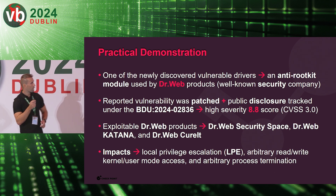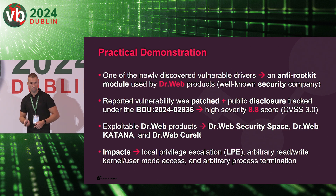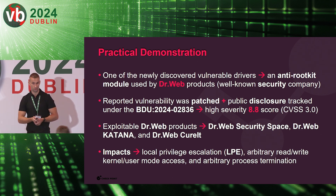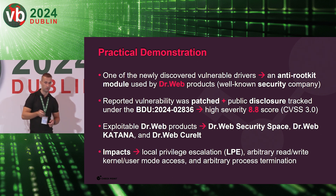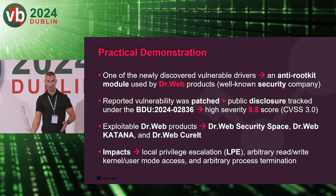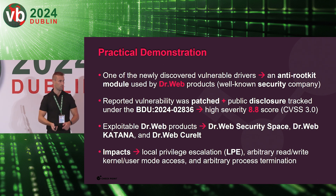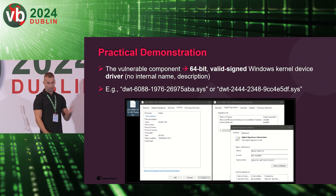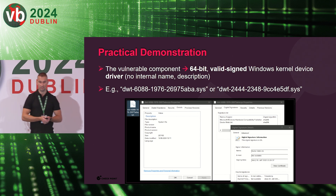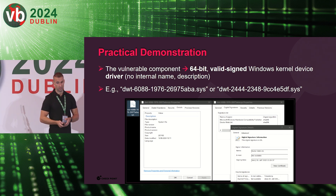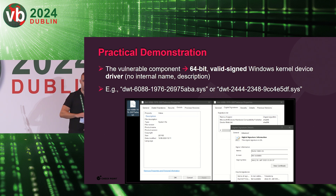Let's get back to the exploitable Dr. Web products. We found three main products from the Dr. Web company: Dr. Web Security Space, Katana, and Curit. The impacts are pretty serious: local privilege escalation, arbitrary read/write, kernel-to-user mode access — basically read/write anywhere — and arbitrary process termination. The vulnerable component was a 64-bit valid signed Windows kernel device driver. Unfortunately there was no internal name or description in the PE version information — pure emptiness — still signed by Microsoft. Luckily the original PDB path revealed the name DW Shield, and we found several versions of the vulnerable driver.